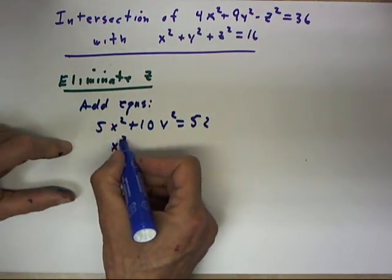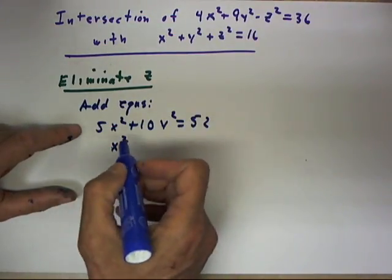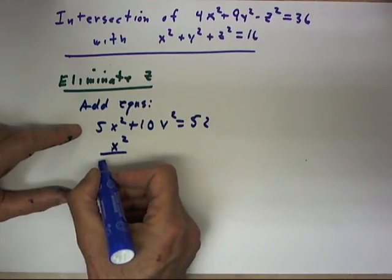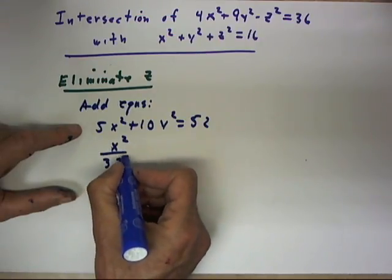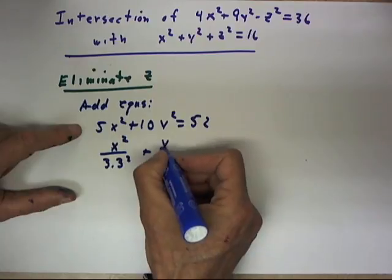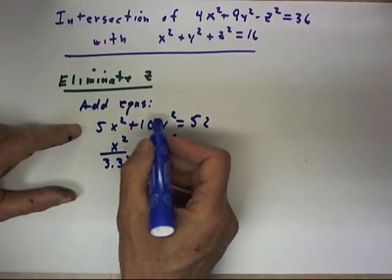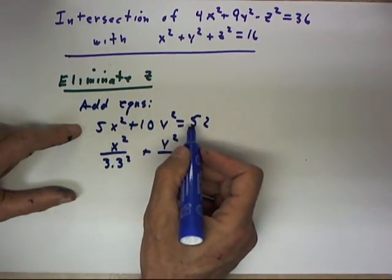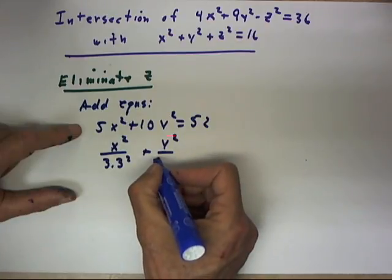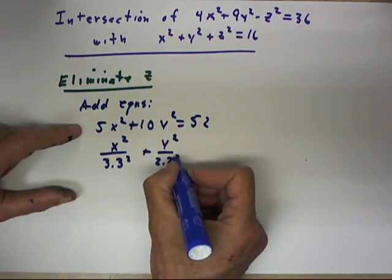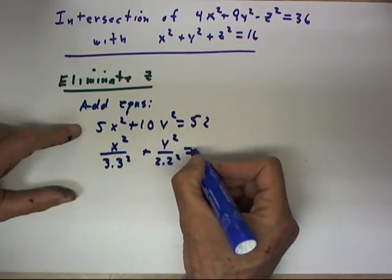That's approximately x squared over 52 fifths, about 10, so that's about x squared over 3.3 squared plus y squared over about 5, so that's going to be about 2.2 squared equals 1.